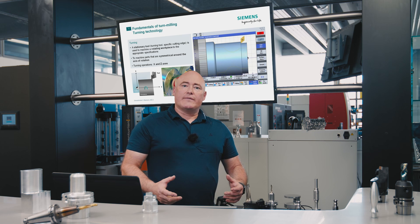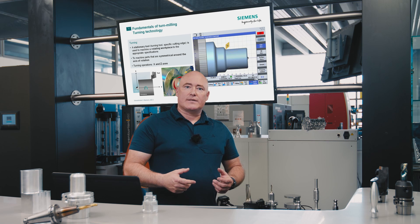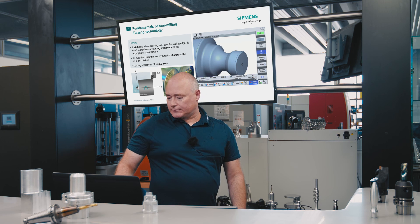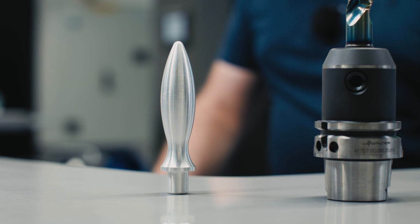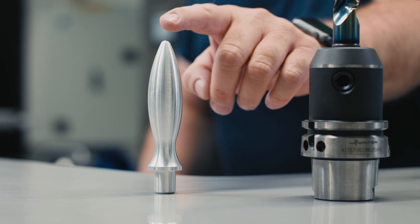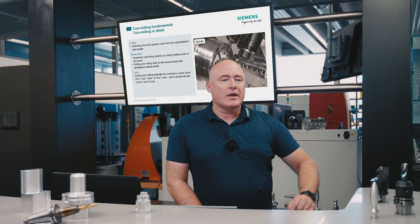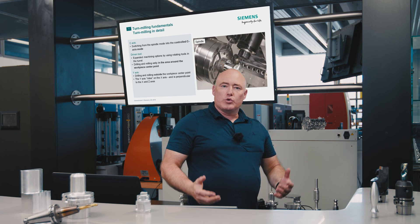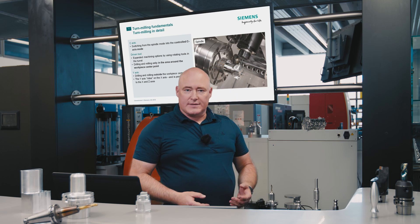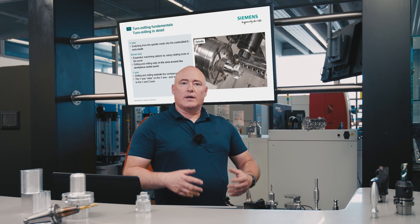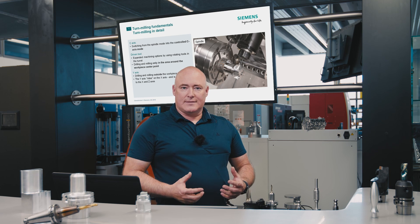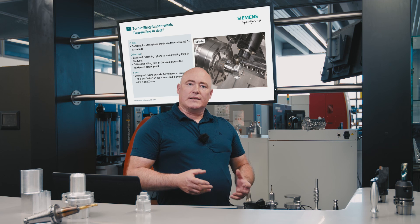How do we define turning? A rotating workpiece is machined into shape as stock is removed by a fixed tool. This is done on the X and the Z axis. If flat areas, contours, or pockets are to be machined into a component with rotational symmetry, such as this one, additional axes are required. In our case, these are the C axis and the Y axis.